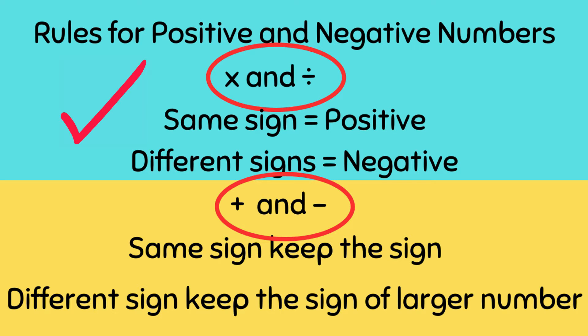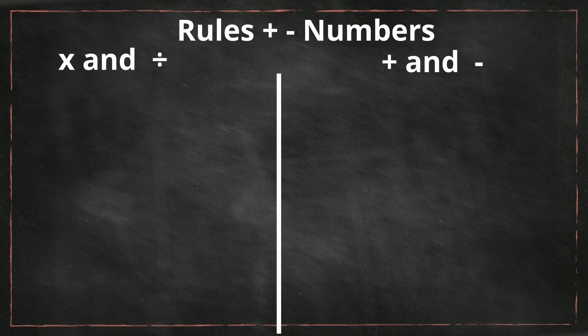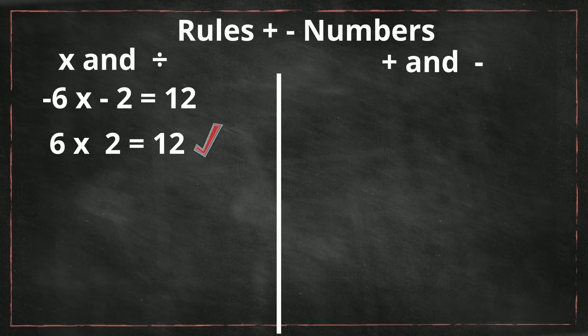So let's work some examples. Negative 6 times negative 2, the signs are the same, so it's positive 12. 6 times 2, they're both positive, it's 12 and it will be positive. This one we have two different signs. 6 times negative 2 equals negative 12.